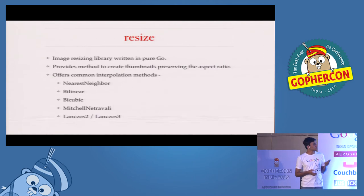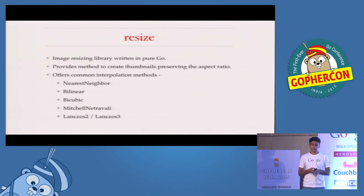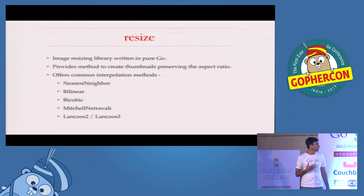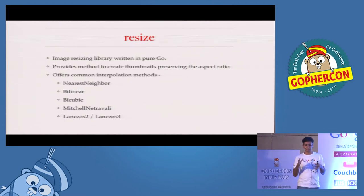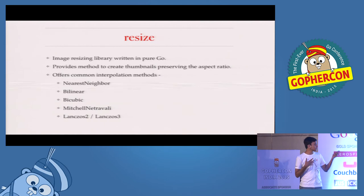For image resizing, there is a very popular resizing library written in pure Go. Apart from providing support for resizing images, it also supports creating thumbnails which preserve the aspect ratio of the image. It has common interpolation methods — nearest neighbor, bilinear. The most popular one that I personally use is bilinear image resizing.